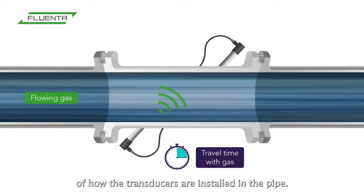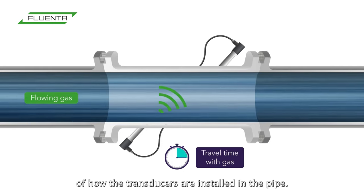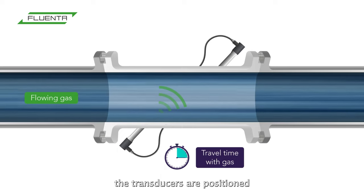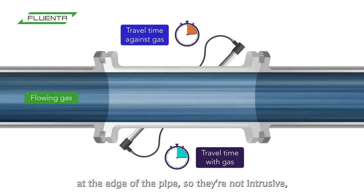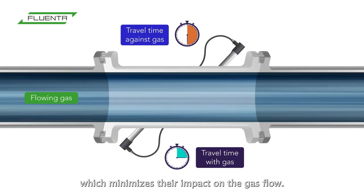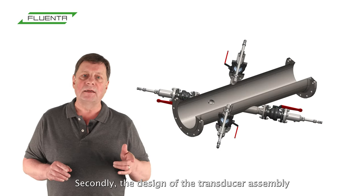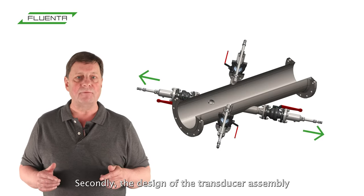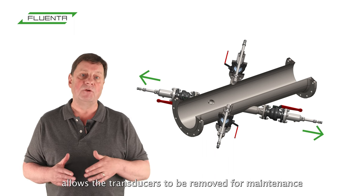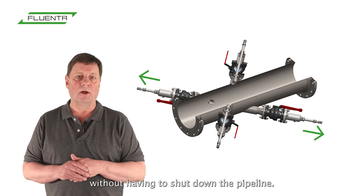Here we see the details of how the transducers are installed in the pipe. As we saw earlier, the transducers are positioned at the edge of the pipe so they're not intrusive, which minimises their impact on the gas flow. Secondly, the design of the transducer assembly allows the transducers to be removed for maintenance without having to shut down the pipeline.